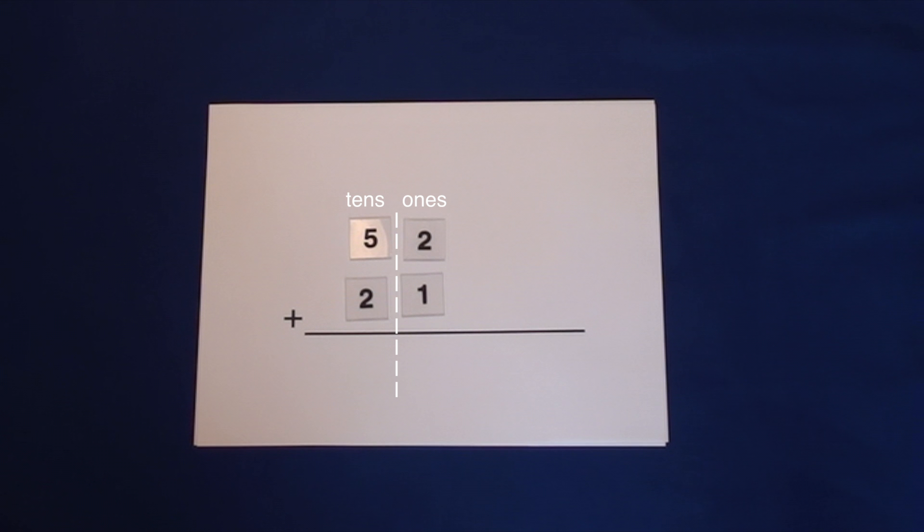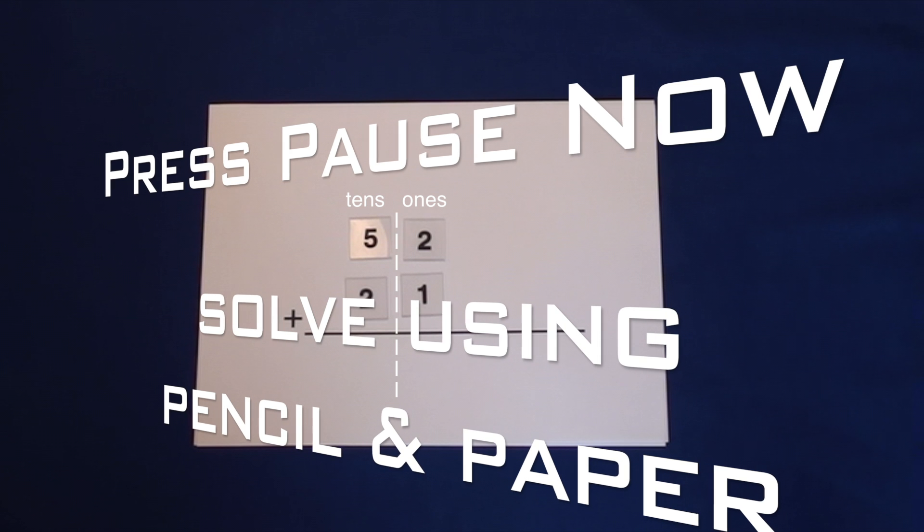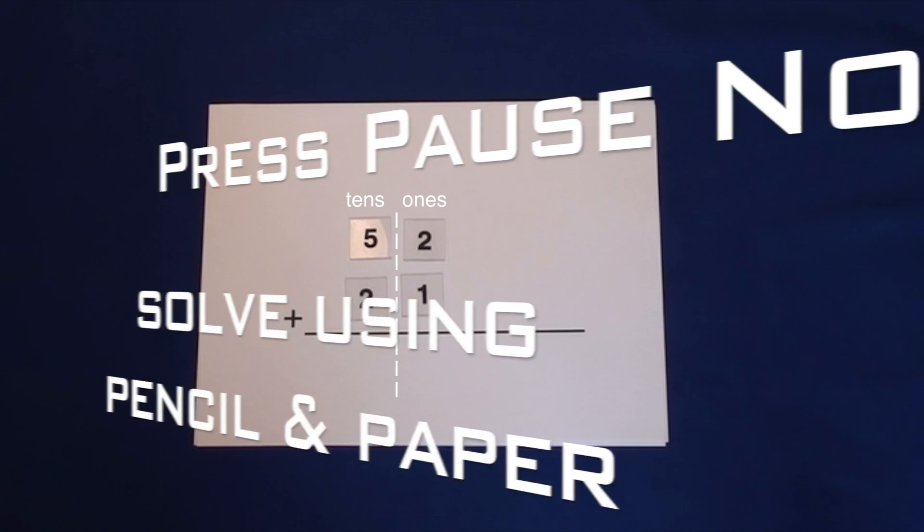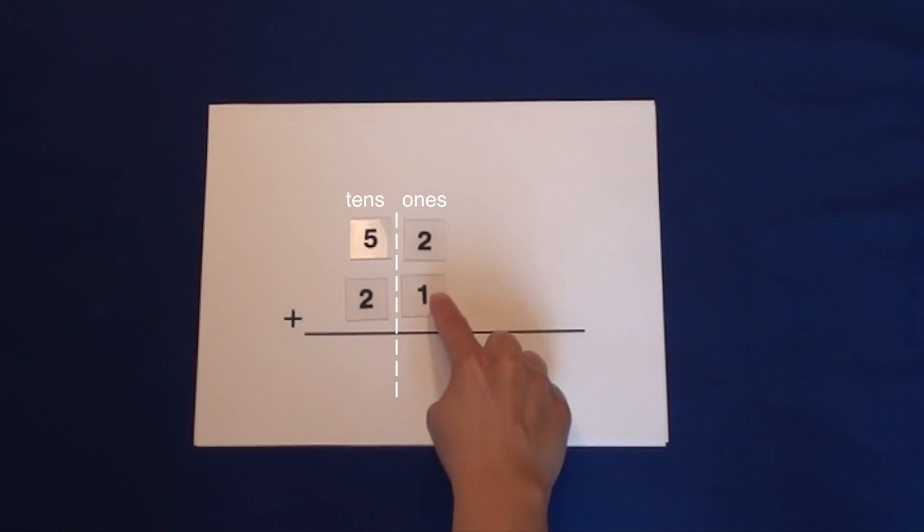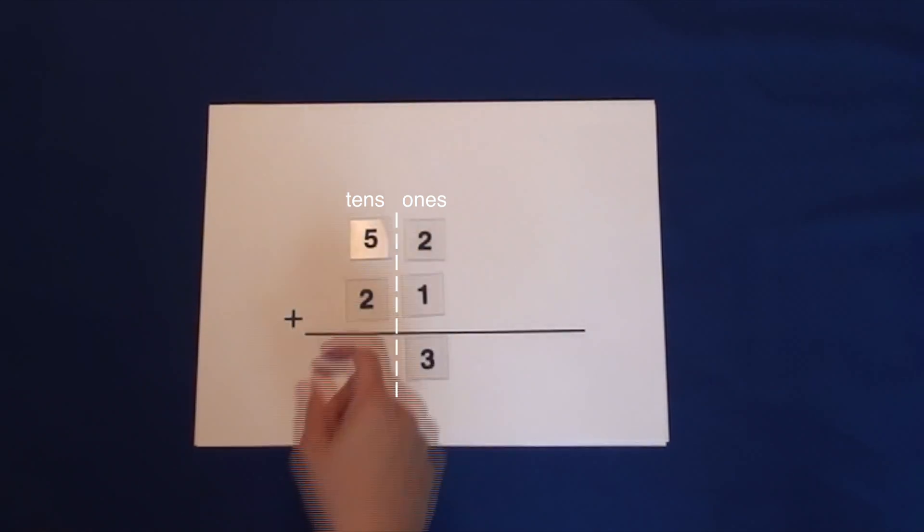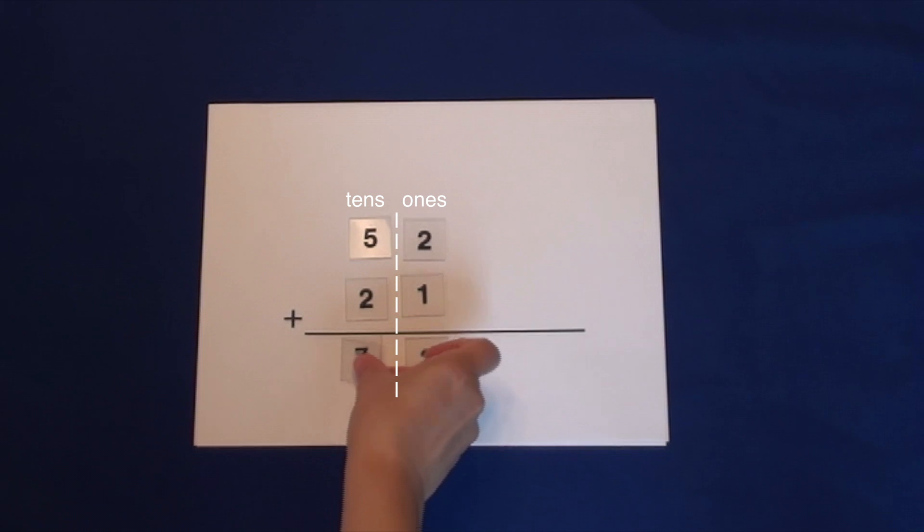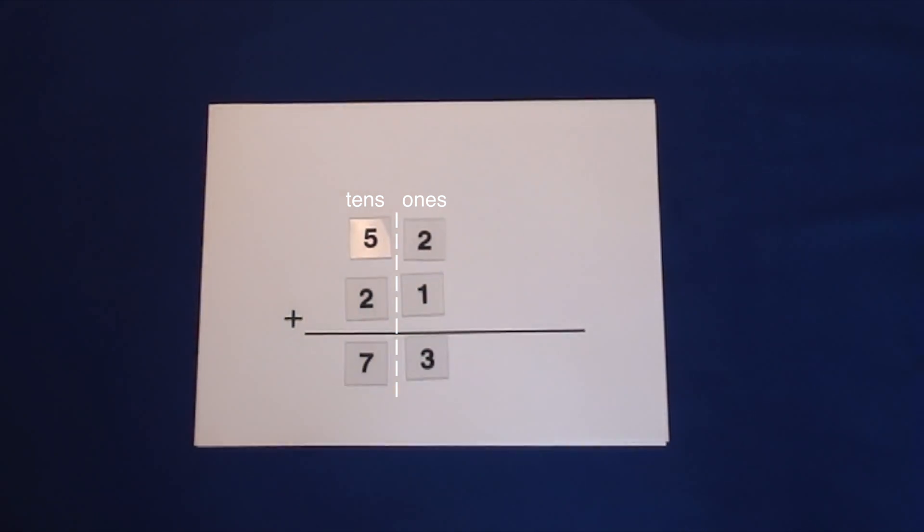Let's try this one. 52 plus 21. Starting with ones, 2 plus 1 equals 3. No need to regroup. On to the tens. 5 plus 2 equals 7. Well done.